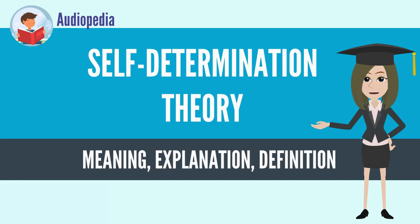Internalization refers to the active attempt to transform an extrinsic motive into personally endorsed values, and thus assimilate behavioral regulations that were originally external. Edward L. Deci and Richard Ryan later expanded on this early work and proposed three main intrinsic needs involved in self-determination. According to Deci and Ryan, these three psychological needs motivate the self to initiate behavior and specify nutrients essential for psychological health and well-being. These needs are said to be universal, innate, and psychological, and include the need for competence, autonomy, and relatedness.